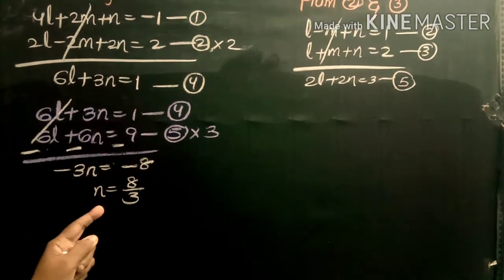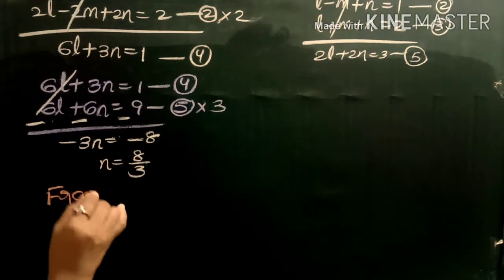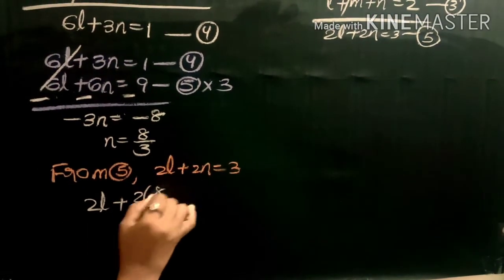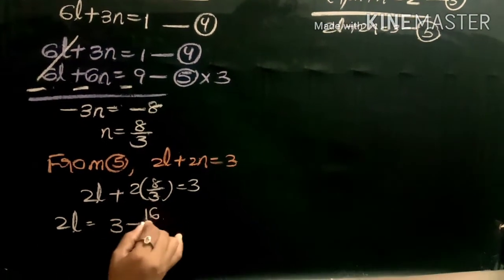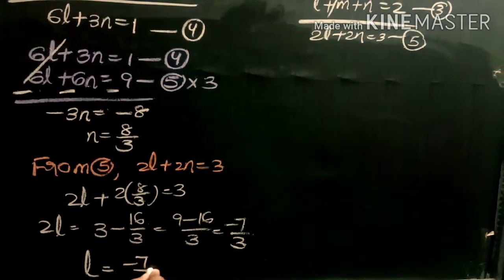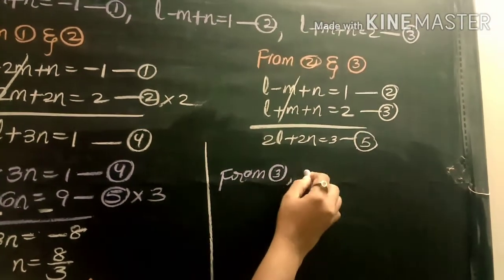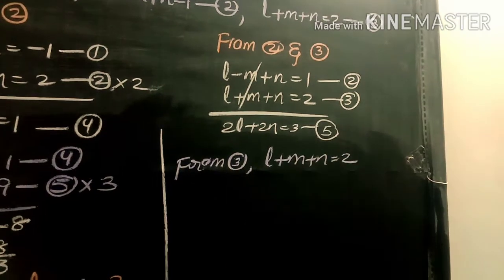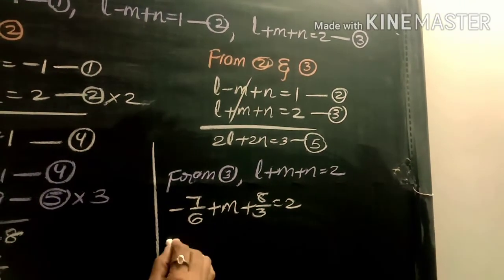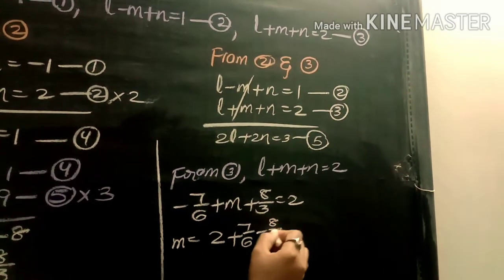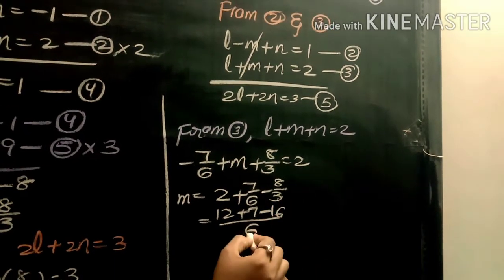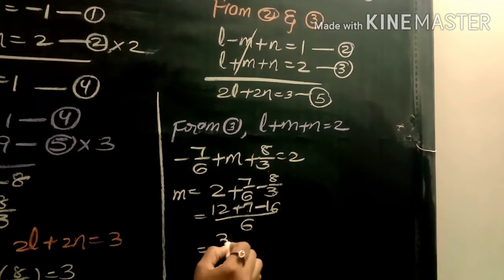Substituting n = 8/3 into equation (5): 2l + 2(8/3) = 3, so 2l = 3 − 16/3 = (9 − 16)/3 = −7/3, giving l = −7/6. Then substituting l = −7/6 and n = 8/3 into equation (3): −7/6 + m + 8/3 = 2, so m = 2 + 7/6 − 8/3 = (12 + 7 − 16)/6 = 3/6 = 1/2.